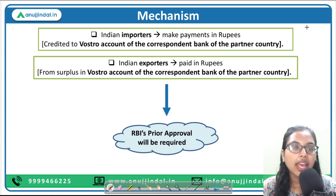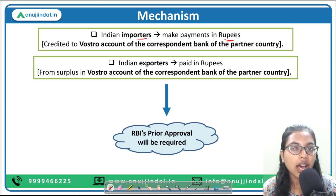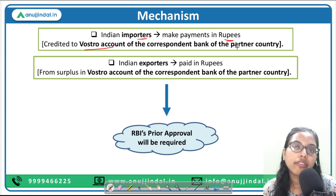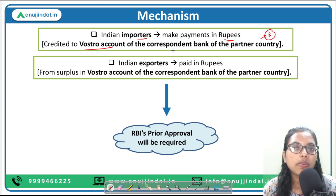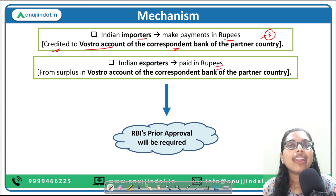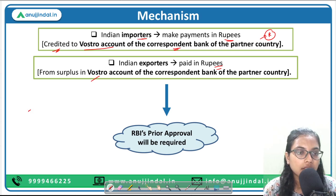Here is the mechanism: Indian importers will make payments in rupees only, without converting to another currency. There will be a special account called the Vostro account of the correspondent bank of the partner country. Suppose the partner country is Russia — a Vostro account of a Russian bank will be opened with an Indian bank, and money will be credited there. Exporters will be paid or reimbursed in rupees directly from the surplus in this special Vostro account.